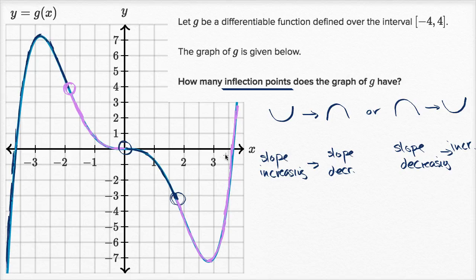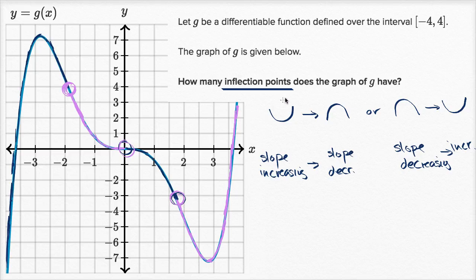So inflection points are where we go from slope increasing to slope decreasing — concave upwards to concave downwards — and also from slope decreasing to slope increasing. We identified one transition here, another there, and another here. So how many inflection points does the graph of g have? It has three, over the interval we can see.